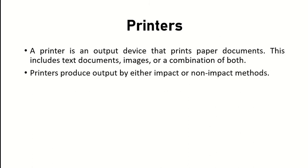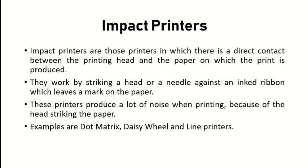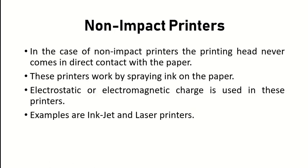Printers output text documents, images, or a combination on paper. Printers use either an impact method or a non-impact method. In impact printing, the printing head makes direct contact with the paper via a strike needle and ribbon ink, as in dot matrix, daisy wheel, and line printers. In non-impact printing, there is no direct connection between the printing head and paper; instead, electrostatic or electromagnetic charge is used, as in inkjet and laser printers.